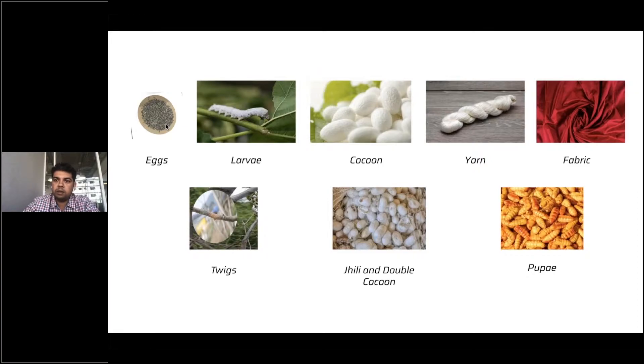That larva is then consumed by the farmers. The farmers typically have their own mulberry lands. If they don't have a mulberry land, they basically buy their mulberry leaves because that's what the silkworm feeds on.